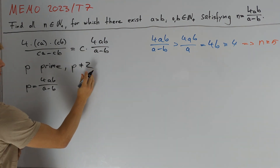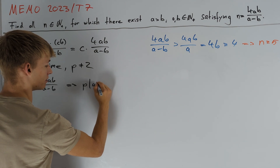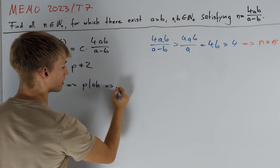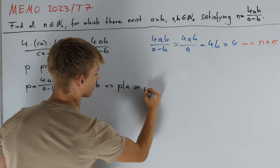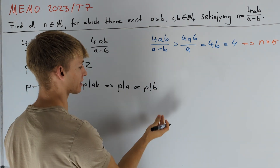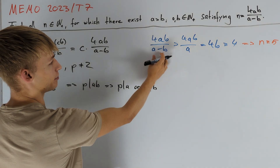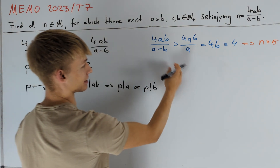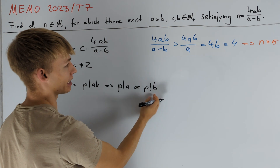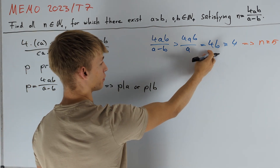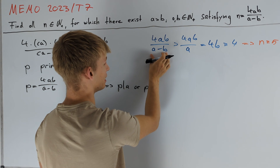Since p is not equal to 2, p divides a times b, and since p is prime, p must divide a or p must divide b. We can directly exclude the case p divides b, because 4ab divided by a minus b is greater than 4b, and if p divides b this is greater than or equal to 4p, which can't equal p.